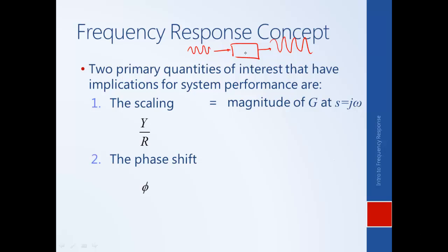We can calculate the scaling from the transfer function G(s) by calculating the magnitude of the transfer function at s equals j omega. If we substitute s equals j omega, the transfer function becomes a complex number. We find the magnitude of that complex number — using the Pythagorean theorem: take the square of the real part, add it to the square of the imaginary part, and take the square root to get the magnitude.